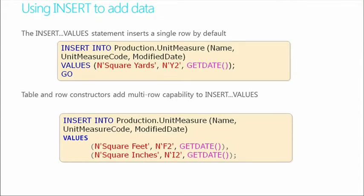Another way we can add content is INSERT INTO for inserting a basic row. We're adding a value in the name column called 'square yards' and the unit measure code is Y2. For the modified date, we're retrieving the system date rather than hard-coding it. This adds just a single row. We can add multiple rows using a similar statement — under VALUES, we add multiple occurrences, such as square feet and square inches with codes F2 and I2.